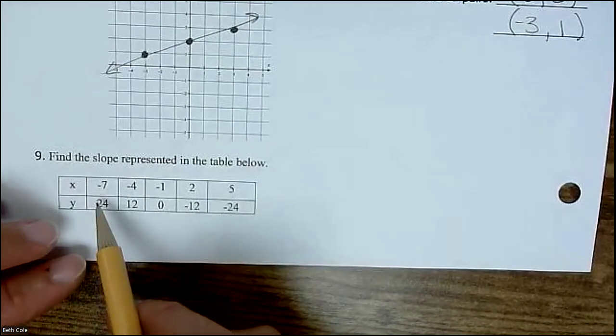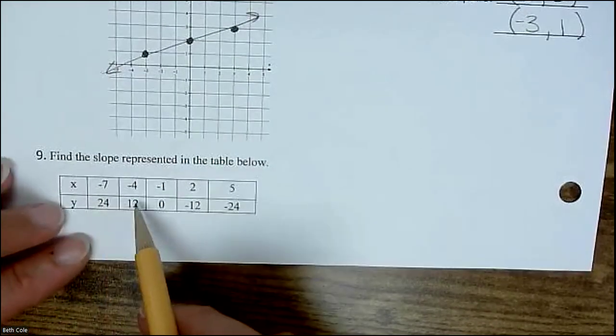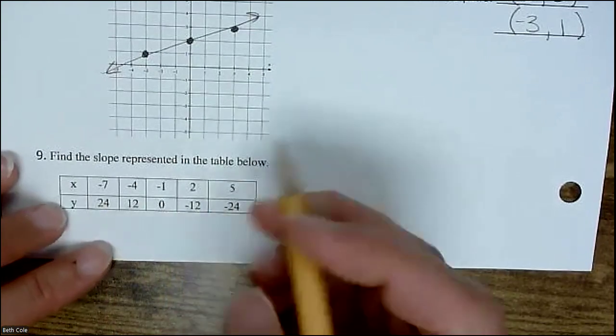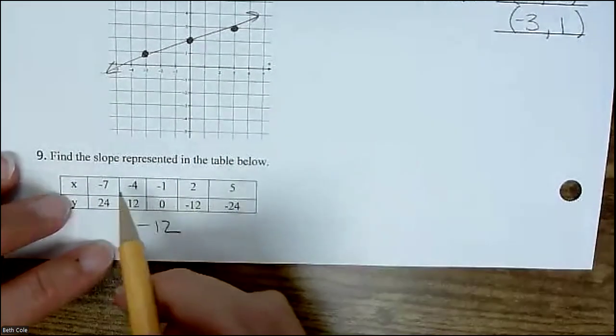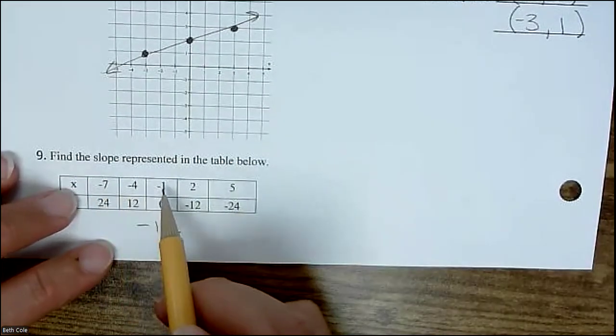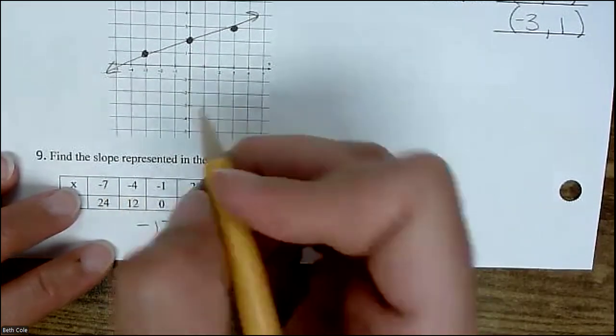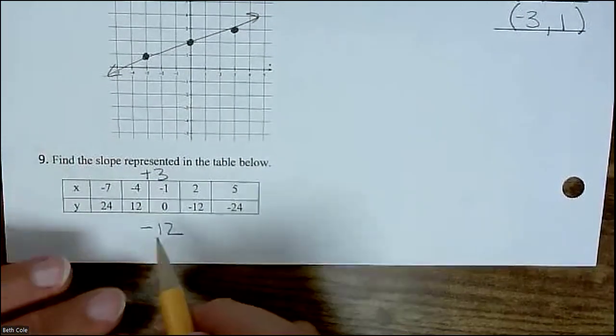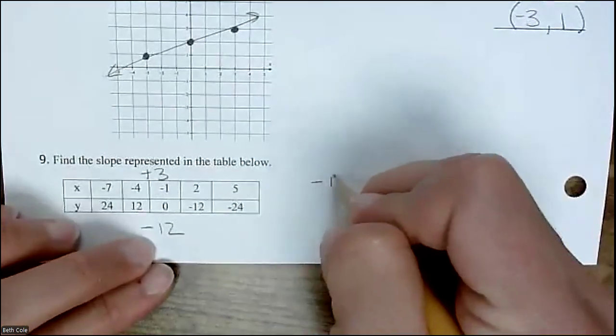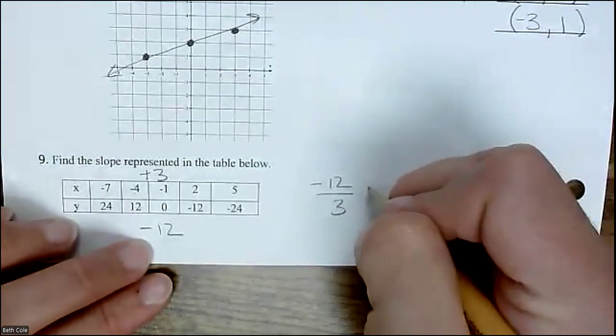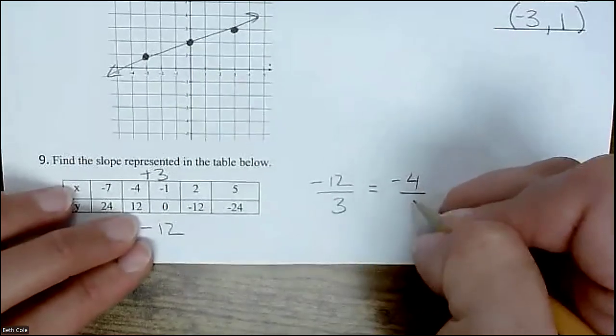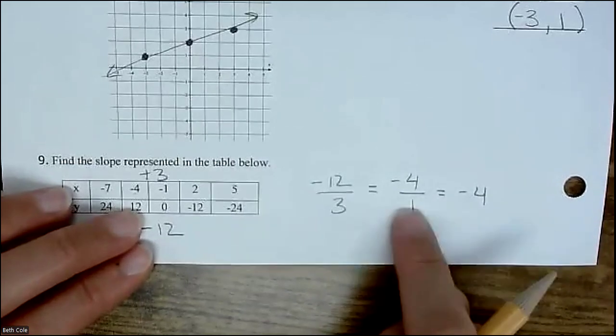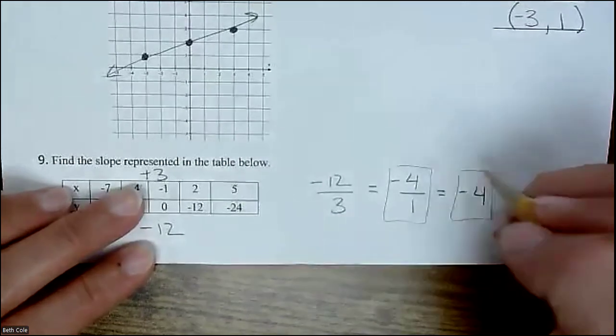Here, we're going to do the slope from the table. We're going to look at what's happening with y in this pattern: 24, 12, 0, negative 12, negative 24. It's going down 12 each time. And then negative 7, negative 4, negative 1, 2, 5. It's going up 3 each time. The thing is people get this backwards. Just make sure you put y over x. It's negative 12 over 3, and if it reduces, you should do that. It's negative 4 over 1, or you can just say negative 4. These are both okay.